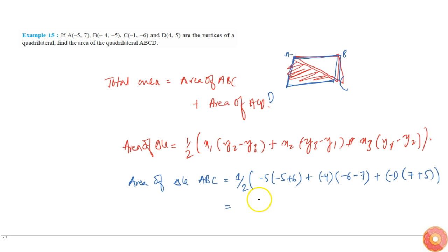equal to half into minus 5 into 1 is minus 5, plus minus 4 into minus 13 is 52, minus 12 is equal to half into 52 minus 17. 52 minus 17 is simply 35, this is equal to 35 by 2.